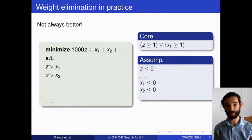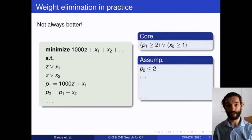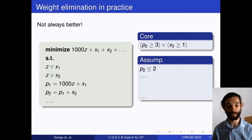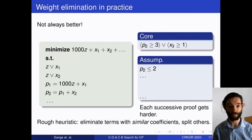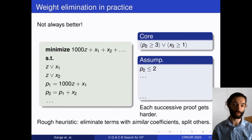If we have a single large-weight penalty that turns off a bunch of other cores, doing weight elimination eliminates z entirely in the first term — then every successive proof gets harder for the solver. So we only use elimination when it will be easier to solve; a rough heuristic is to only use elimination on terms with similar order-of-magnitude coefficients.